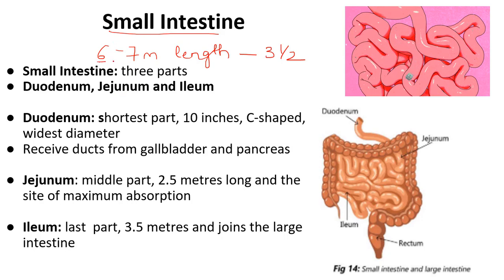Please remember the length of the small intestine — it is 6 to 7 meters in length. The small intestine is divided into three parts: duodenum, jejunum, and ileum. Duodenum is the first part of the small intestine — that C-shaped structure which you can see, approximately 10 inches, is said to be the duodenum.